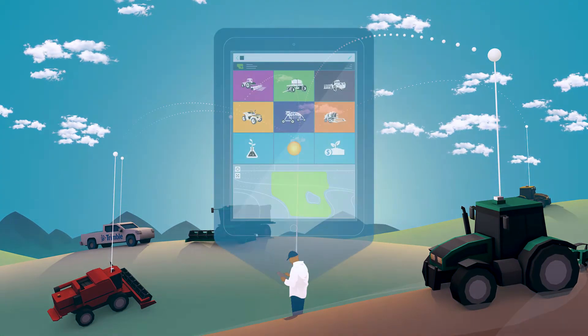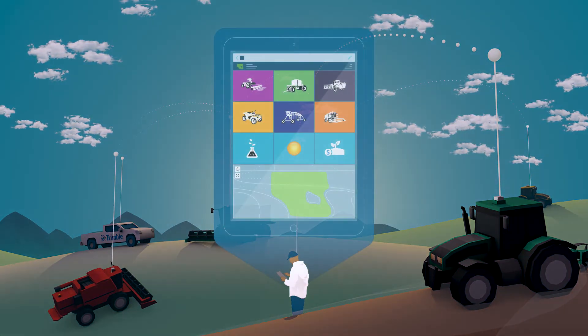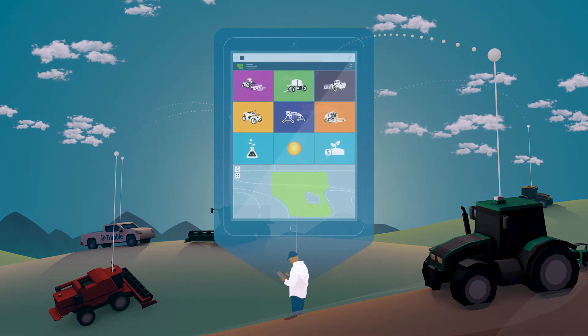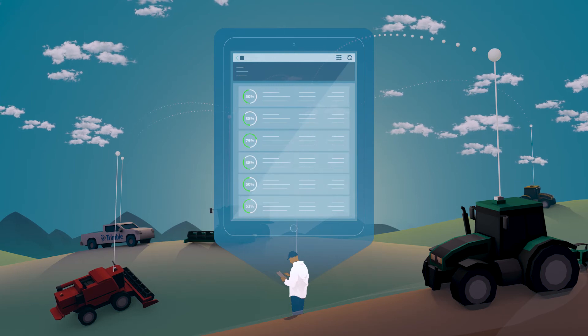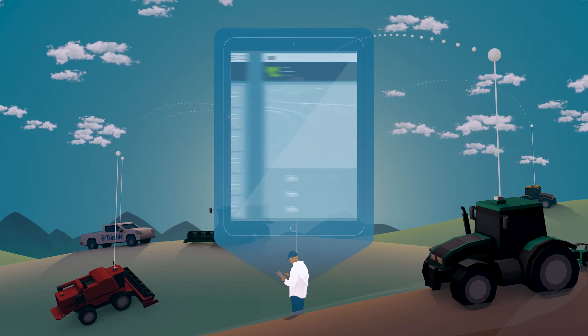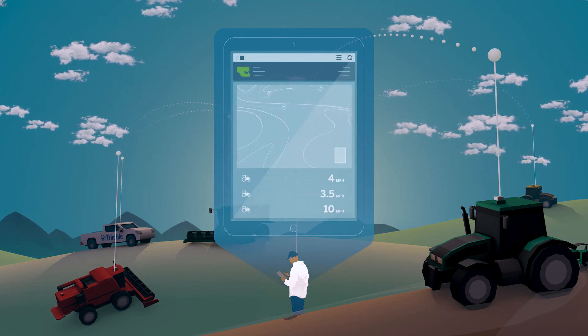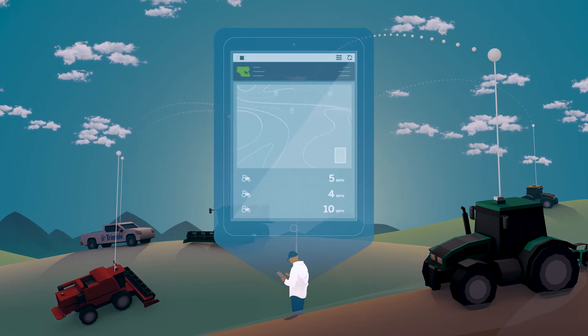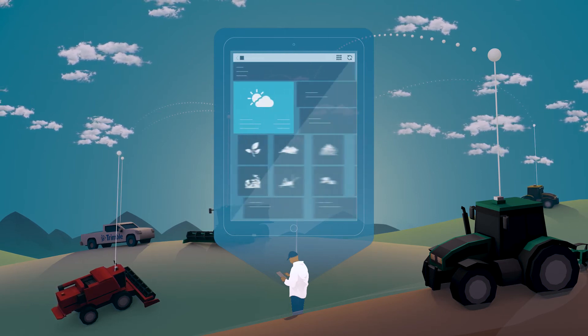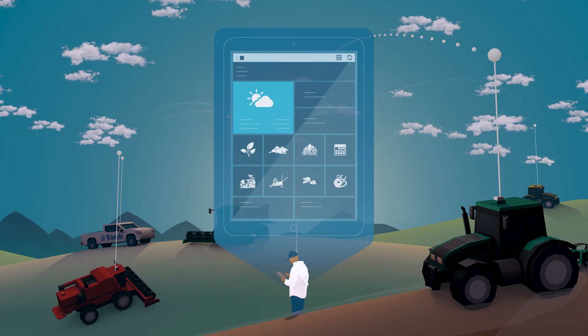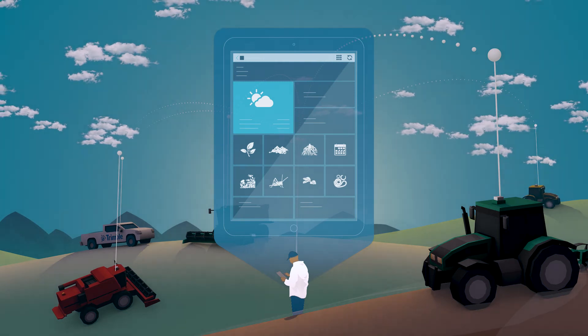From your mobile device, you can enter or view past applications, track your grain storage and contracts, monitor your equipment's location and speed, and record and share crop scouting findings with your team.